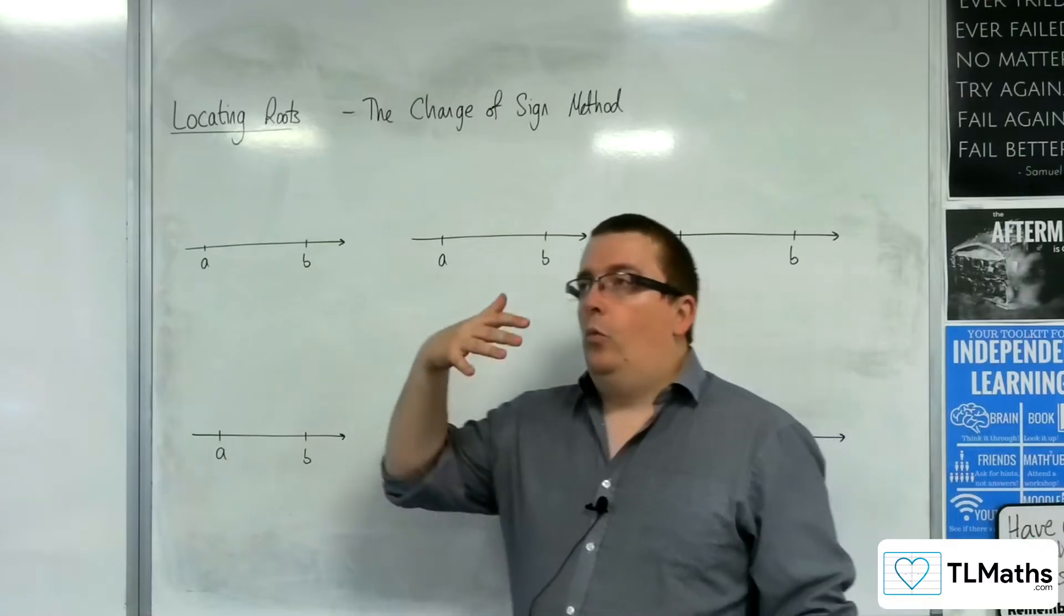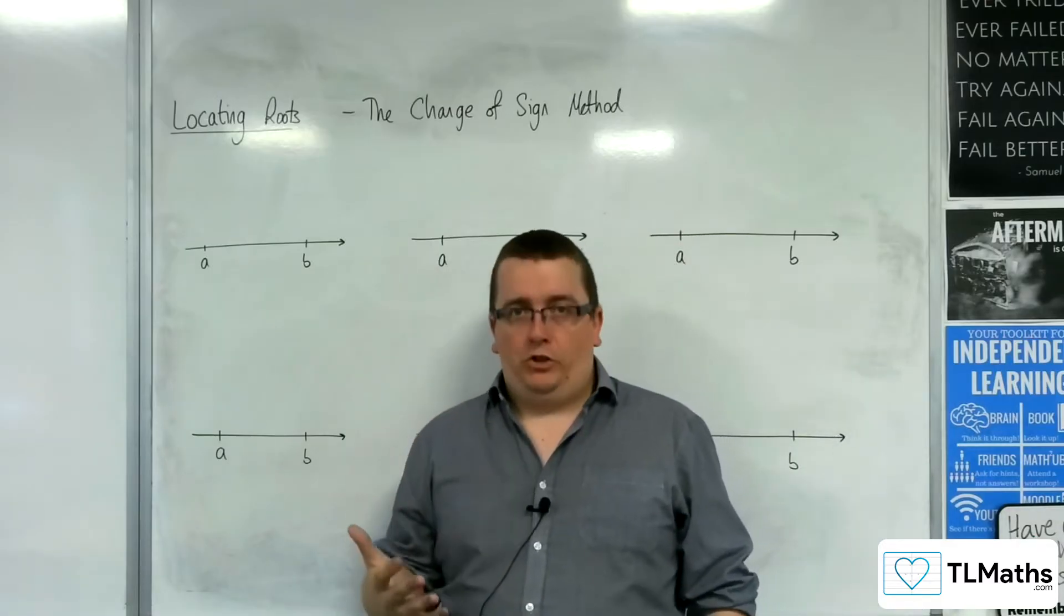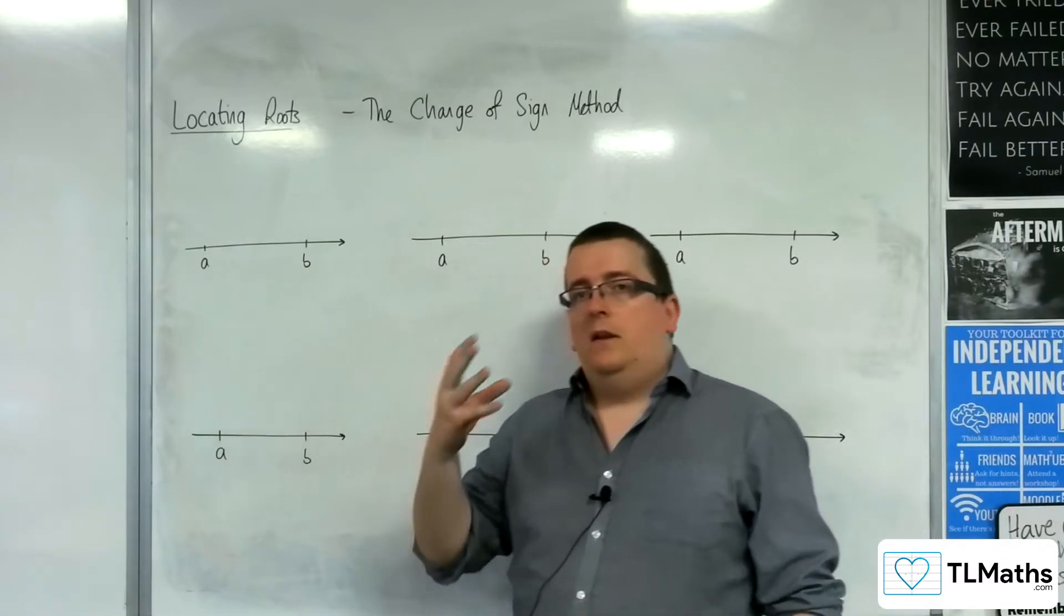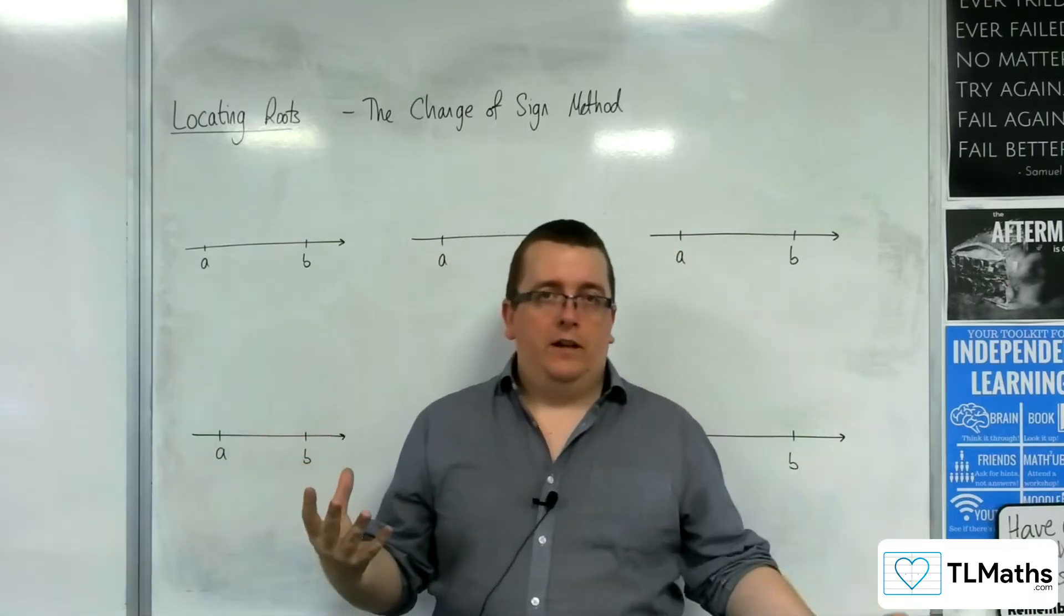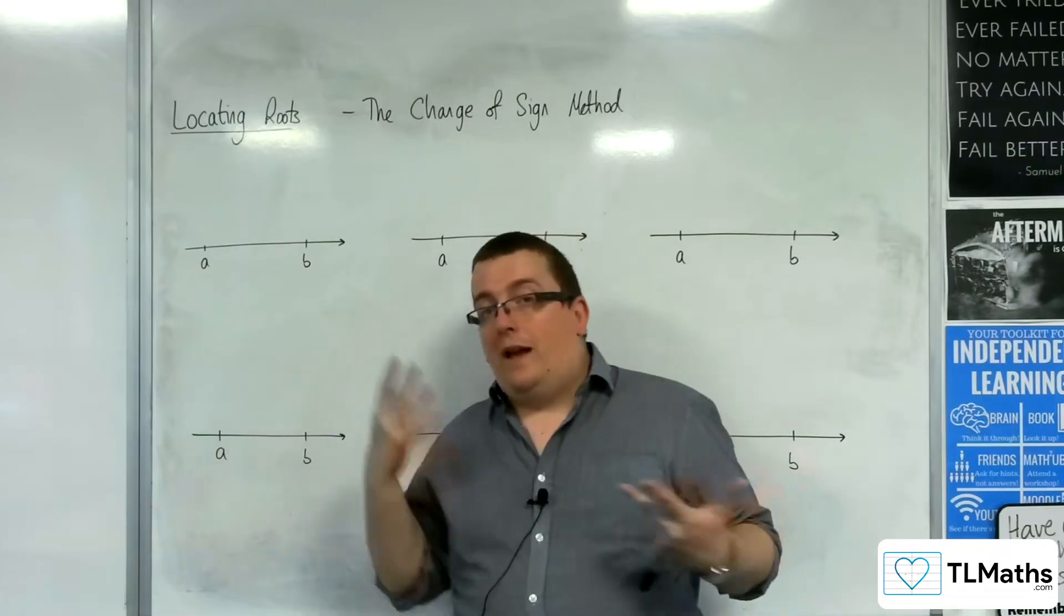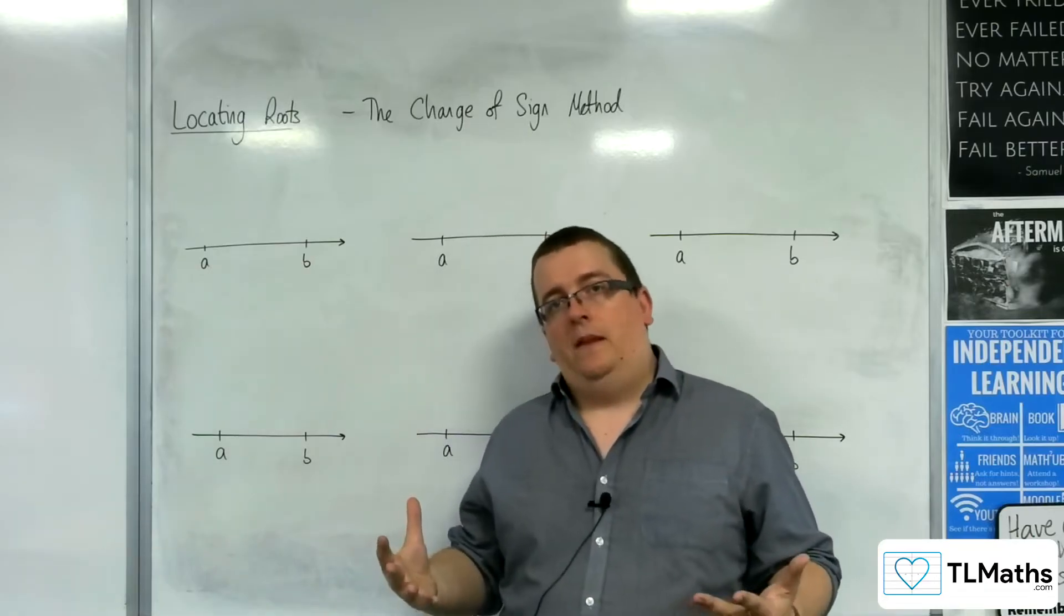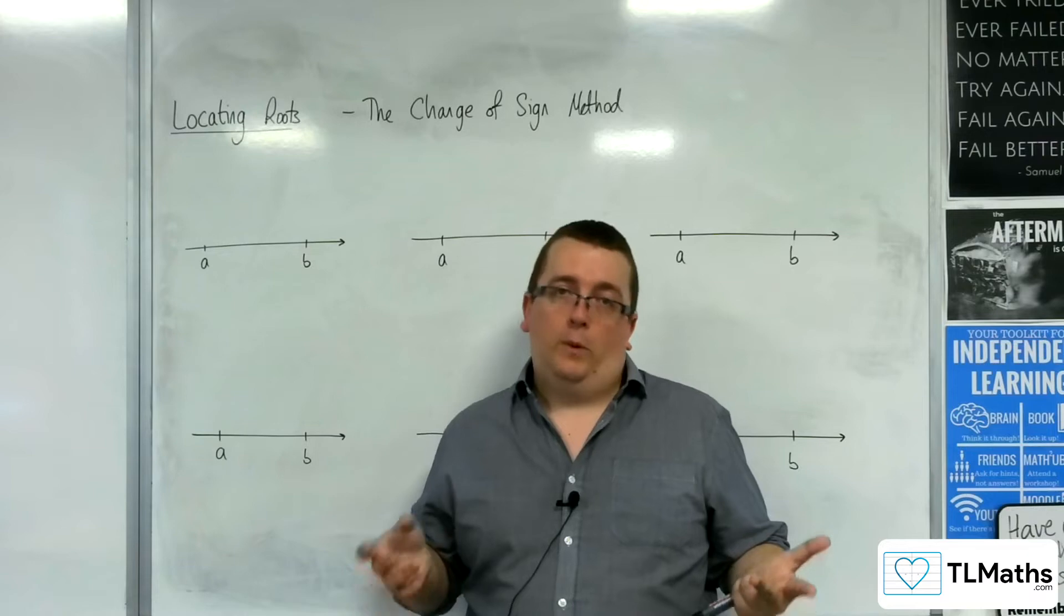I've highlighted that when we are explaining whether there is a change of sign, there has to be those two bits: change of sign and the curve is continuous. If you don't have one of those two things, then you can have all sorts of situations appear.